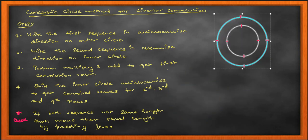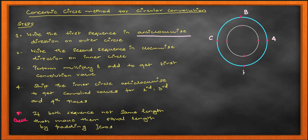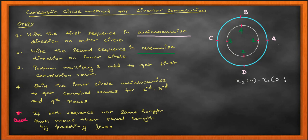An important note: if your two sequences are not of the same length, you pad zeros to the shorter sequence to make both sequences equal in length to the longer one. Only after making them equal length can you proceed with the circular convolution computation.